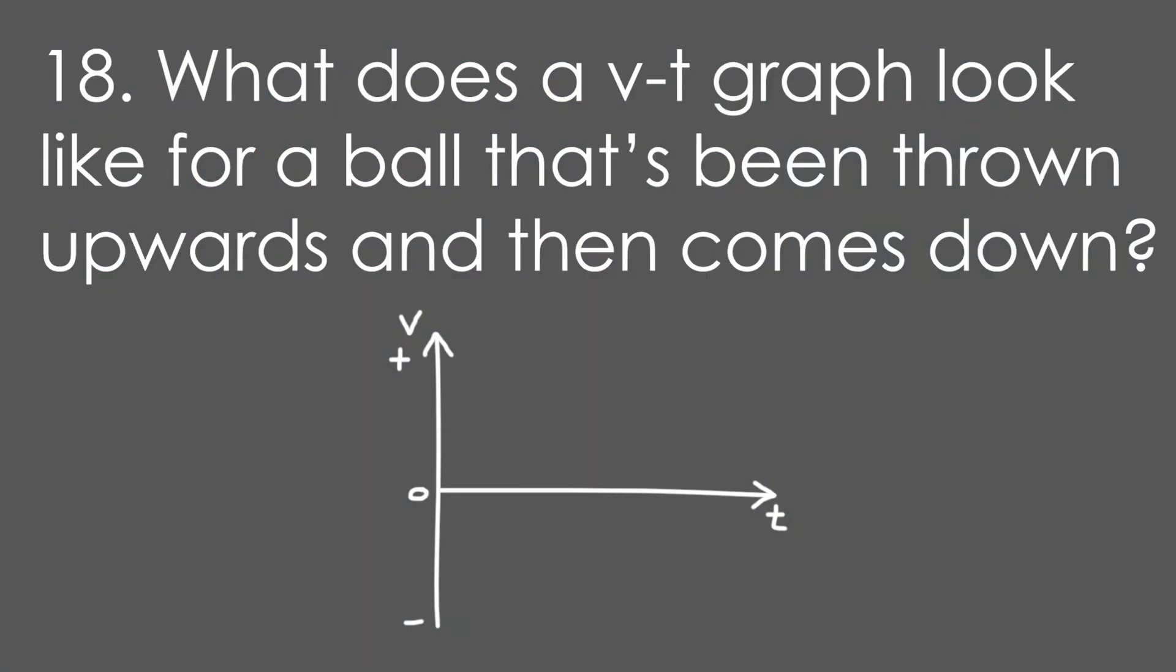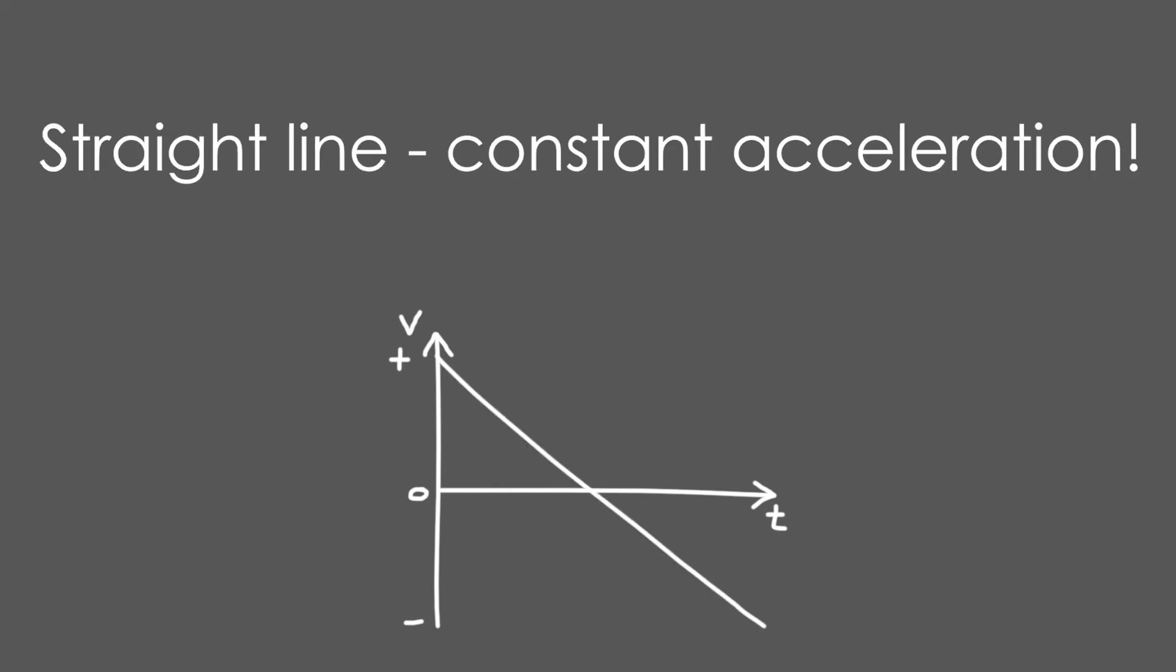18. What does a velocity time graph look like for a ball that's been thrown upwards and then comes back down? This is more of an A-level question. It's a straight line, because it's constant acceleration downwards. It's a negative gradient.